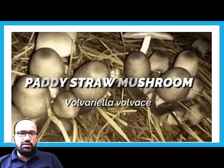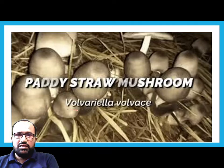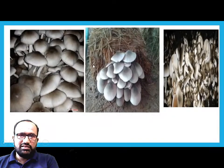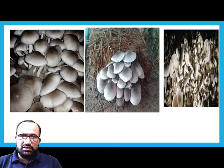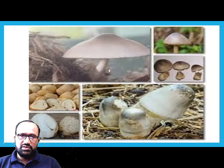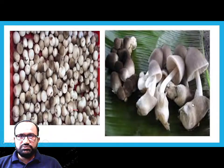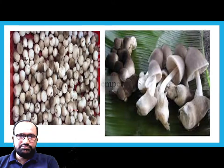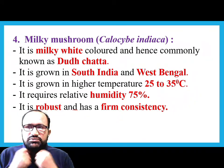The species of paddy straw mushroom is Volvariella volvacea. Its color is brownish. It is a fast growing mushroom. Key points: Chinese mushroom, fast growing, 15 to 18 days spawning period, temperature 25 to 35 degrees Celsius, humidity 85%, commonly grown in Odisha and West Bengal.